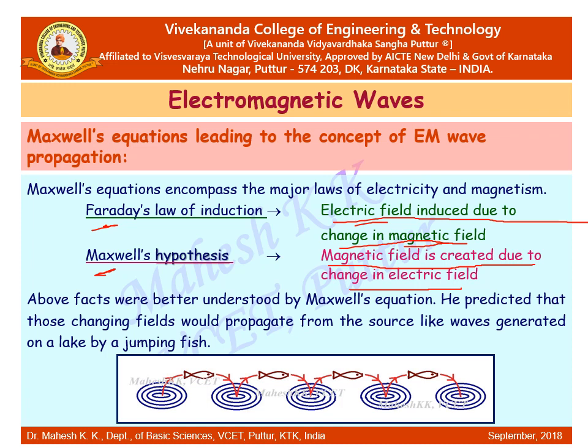Understand one thing: at the time when Maxwell proposed that changing electric fields create magnetic fields, there was no experimental evidence to prove it. Maxwell realized that oscillating charges produce changing electric fields. It is a great intellectual contribution by Maxwell — he predicted that those changing fields would propagate from the source like waves generated in a lake by a jumping fish.